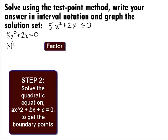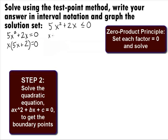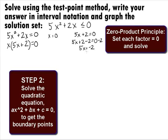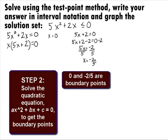Our equation will be 5x squared plus 2x equals 0. We can factor a greatest common factor of x and get x times 5x plus 2 equals 0. Using the zero product principle, we can set each factor equal to 0 and get x equals 0 or 5x plus 2 equals 0. In the first linear equation, our answer is x equals 0. In the second, we subtract 2 from both sides to get 5x equals negative 2, then divide both sides by 5 to get x equals negative 2 fifths. So we have two boundary points: negative 2 fifths and 0.